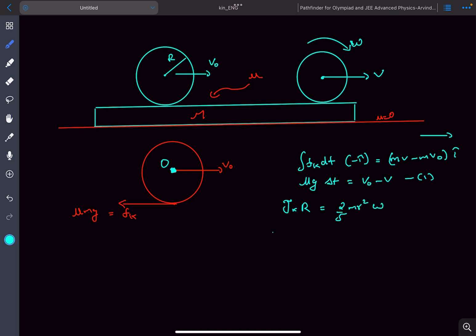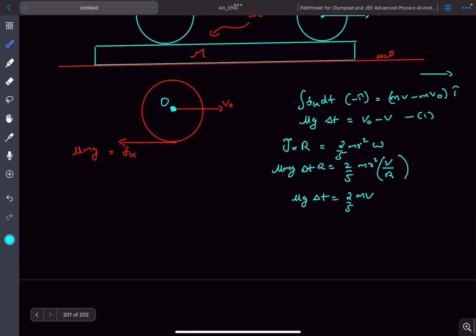Now J equals mu m g delta t. This gives 2/5 m r squared omega, which I can write as v/r using the rolling condition. From here we get mu g delta t equals 2/5 v. This is equation number two.